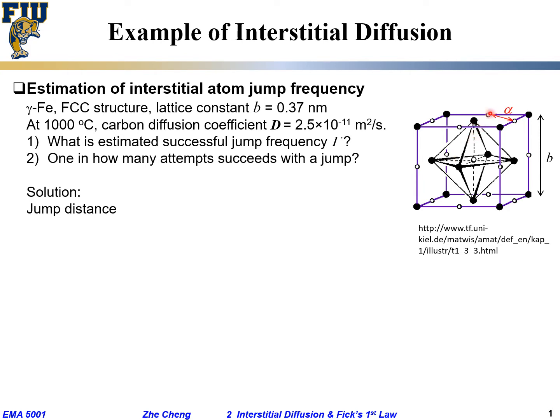Do you see that if I start from here, I'm going to jump to here. That's one possibility. If I start from here, I can jump back. Or jump from here to here. So this is α. What's the relationship between α and b? Remember b is our lattice constant. What is the mathematical relationship between α and b? Remember it's a cube.